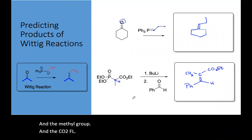So that's it. You can quickly predict the product of a Wittig without having to draw the entire mechanism.